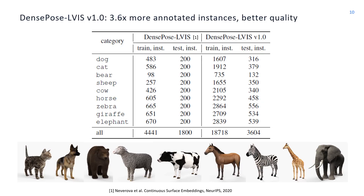We also introduce the DensePose Elvis version 1.0 dataset, an extended version of DensePose Elvis. We improve the quality of the existing labels and significantly expand the DensePose annotation pool for the same animal classes as in the previous version of this dataset.